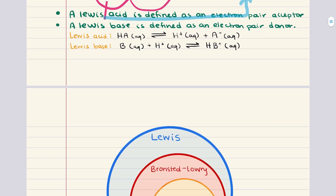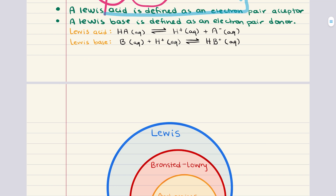Now let's explore the Lewis definition of acids and bases. A Lewis acid is defined as an electron pair acceptor, while a Lewis base is defined as an electron pair donor, like we see in these reactions written here. This definition was proposed by Gilbert Lewis around the same time as the Bronsted-Lowry concept, and it broadens the scope of acid-base chemistry to include a variety of chemical reactions that go beyond hydrogen ion transfer. The key difference between the Lewis and Bronsted-Lowry definitions lies in their focus: Bronsted-Lowry focuses on the transfer of protons, while Lewis focuses on the transfer of electron pairs.